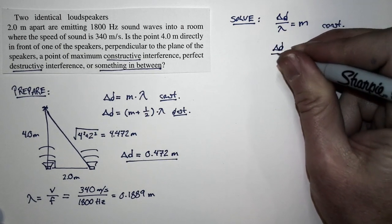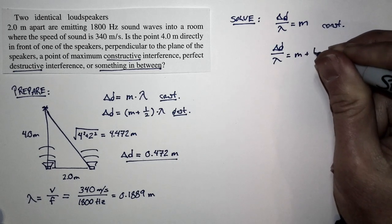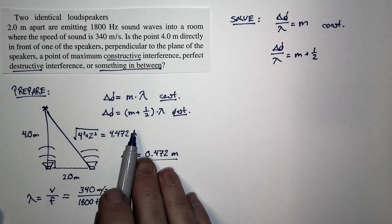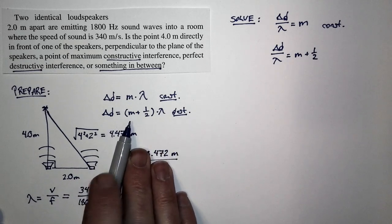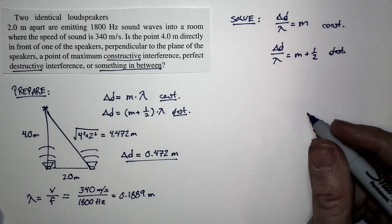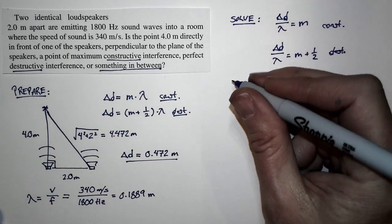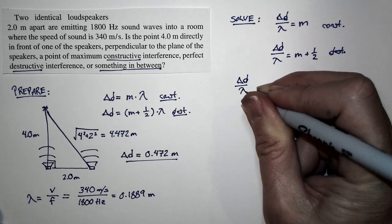If ΔD divided by λ is equal to an integer plus one half, that corresponds to this case right here: ΔD over λ equals M plus a half. That would be a case of destructive interference. Let's figure out, for this case, what is ΔD divided by λ?